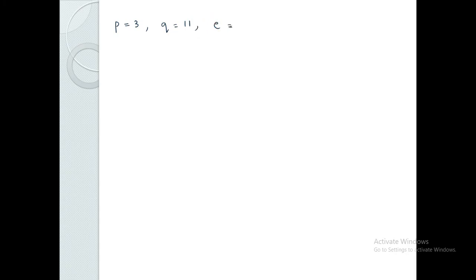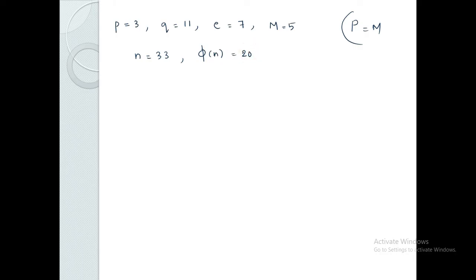To summarize: P value is 3, Q value is 11, E value is 7, and the message M is equal to 5. N equals 33, phi of N equals 20, public key E is 7, and private key D is 3.